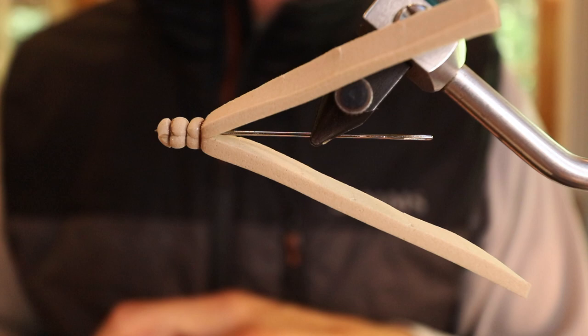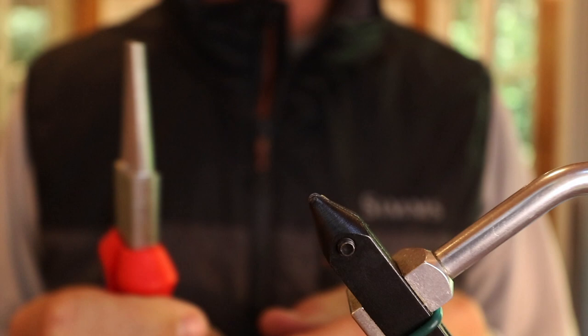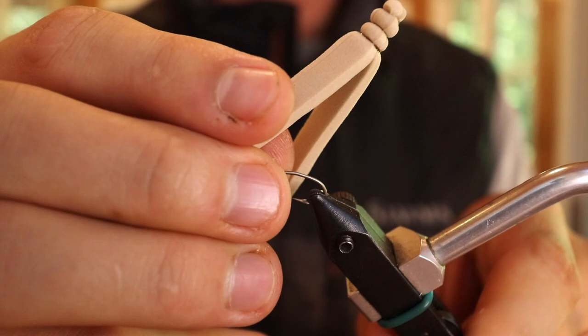Once you pull that off you can grab your hook, I used a size 10 for this, tiny bit of bend on it just to make sure that the hook stands out beneath the body. I go ahead and pierce it through the bottom of that foam and I'm going to get my thread started on here.